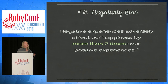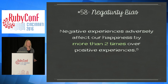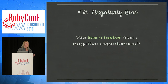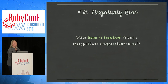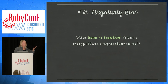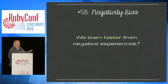Negative experiences have an adverse effect more than two times that of positive experiences. So every time someone in your open source project has a negative experience, you're going to need at least two more positive experiences before it's an even playing field. We also learn faster from negative experiences — like the carrot and the stick, the stick teaches you much faster. People will learn very fast what not to do. This applies at work, at home, everywhere — it's just human behavior, applicable to open source and everyday life.